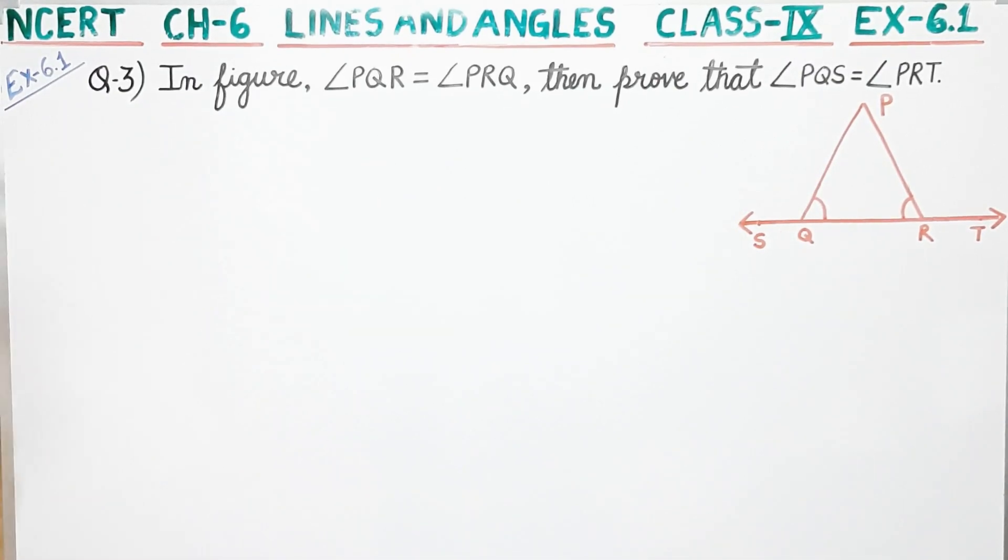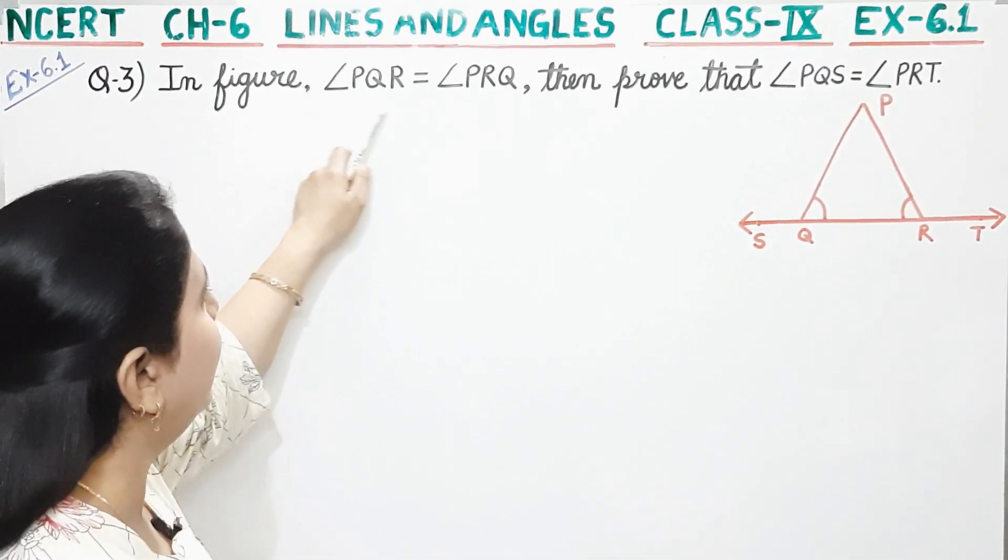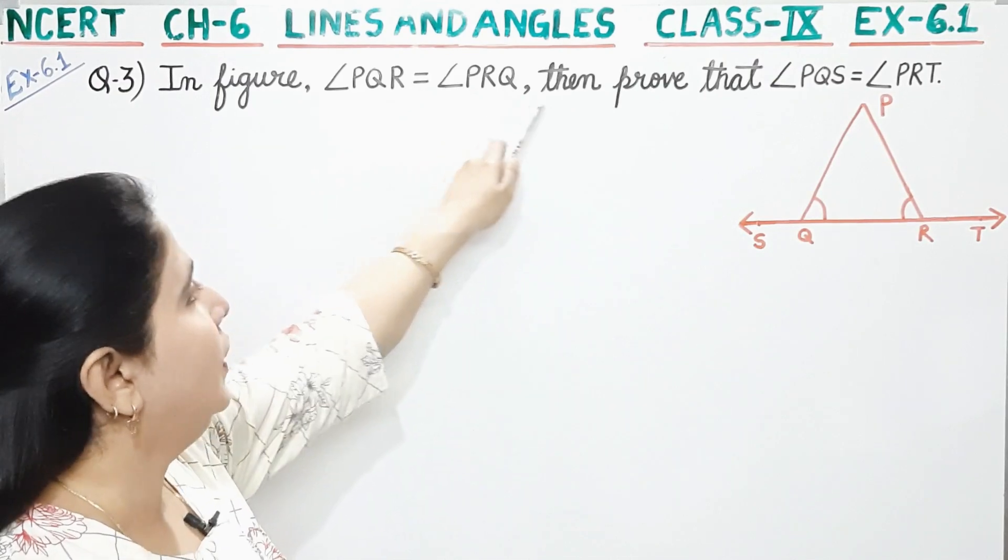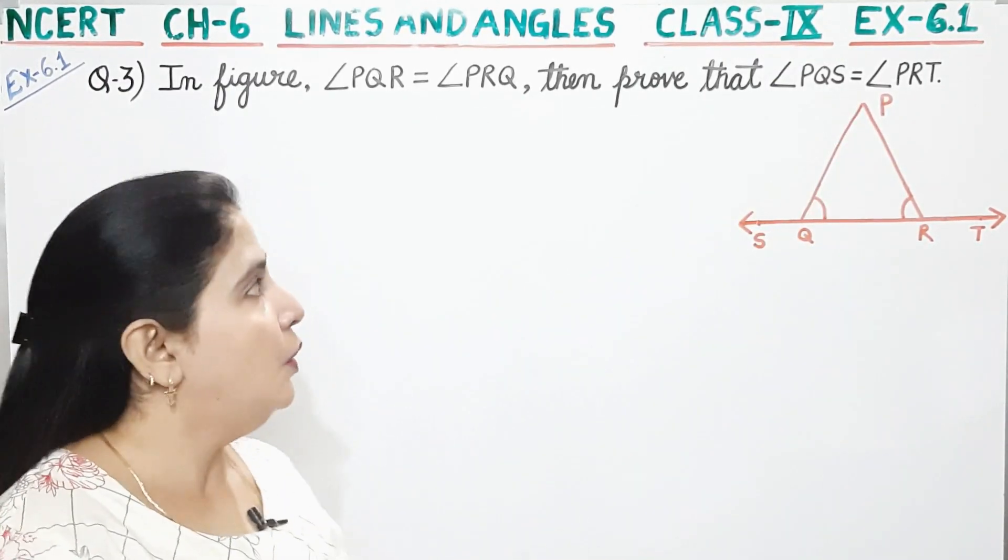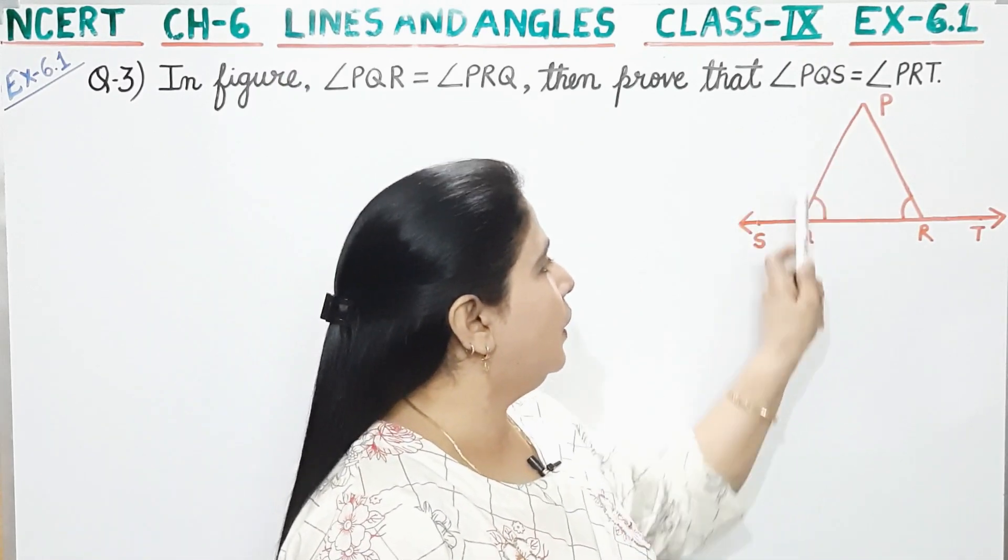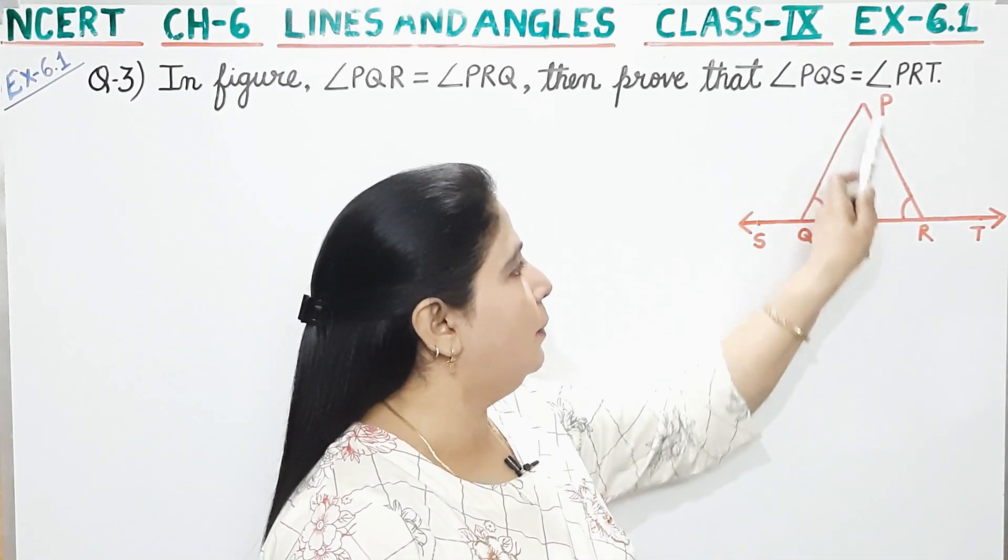So this is question number 3. In figure, angle PQR is equal to angle PRQ, then prove that angle PQS is equal to angle PRT.